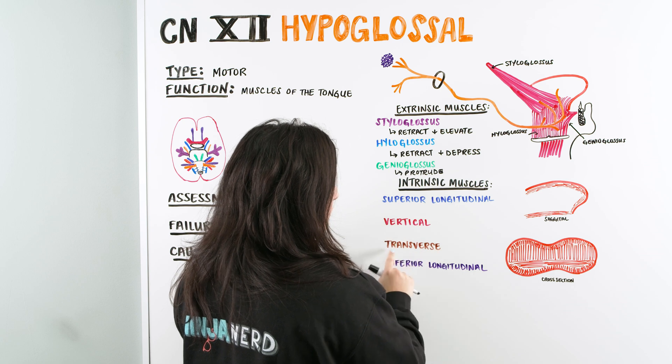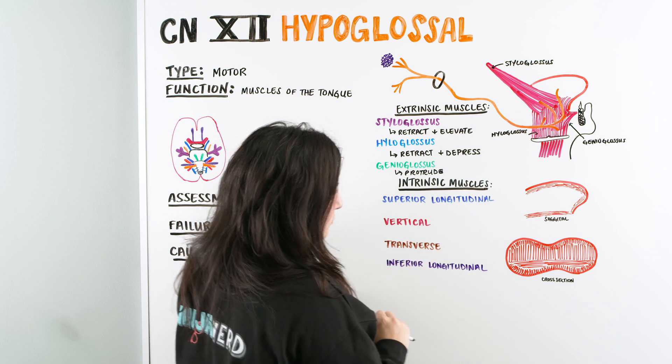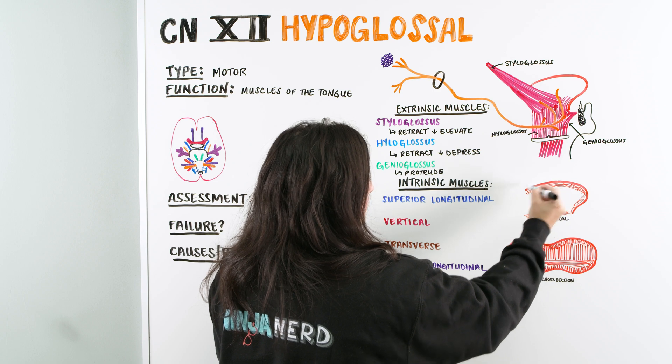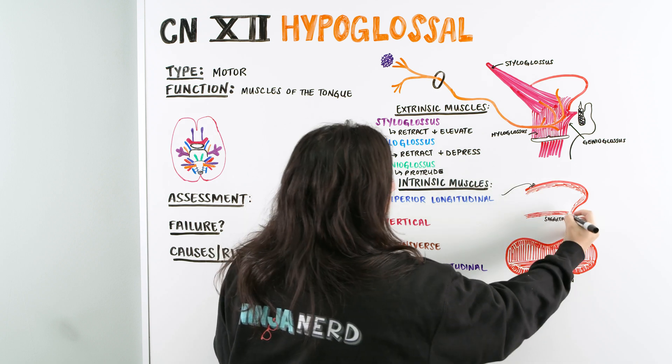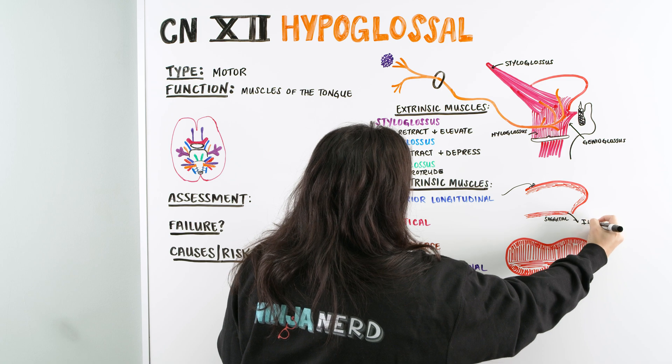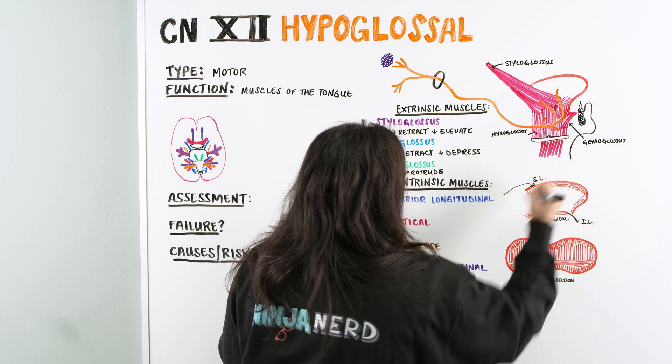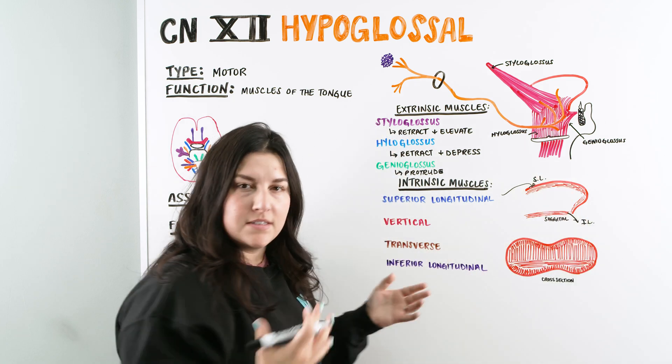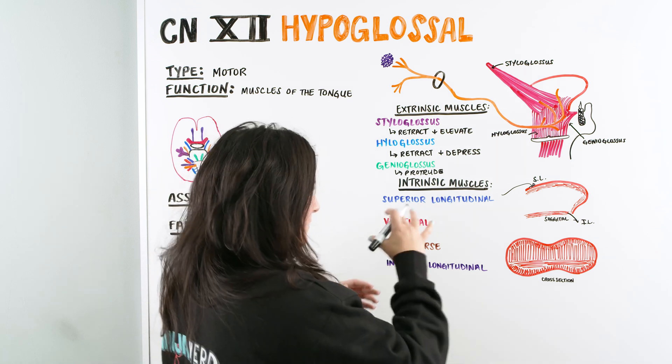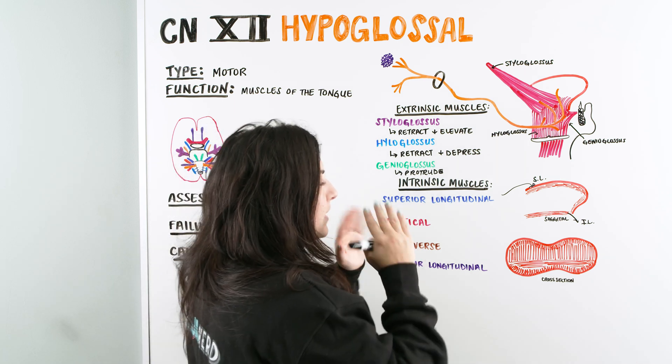So, four different muscles we have. Superior longitudinal, vertical, transverse, and inferior longitudinal. On the sagittal, it's not as easy to see, but we do have the superior, which is located here. And then we have our inferior right here. So we'll just mark that as inferior longitudinal. This is superior longitudinal. But on the cross-section is the area which I think really helps you understand a little bit more of the function of these intrinsic muscles.